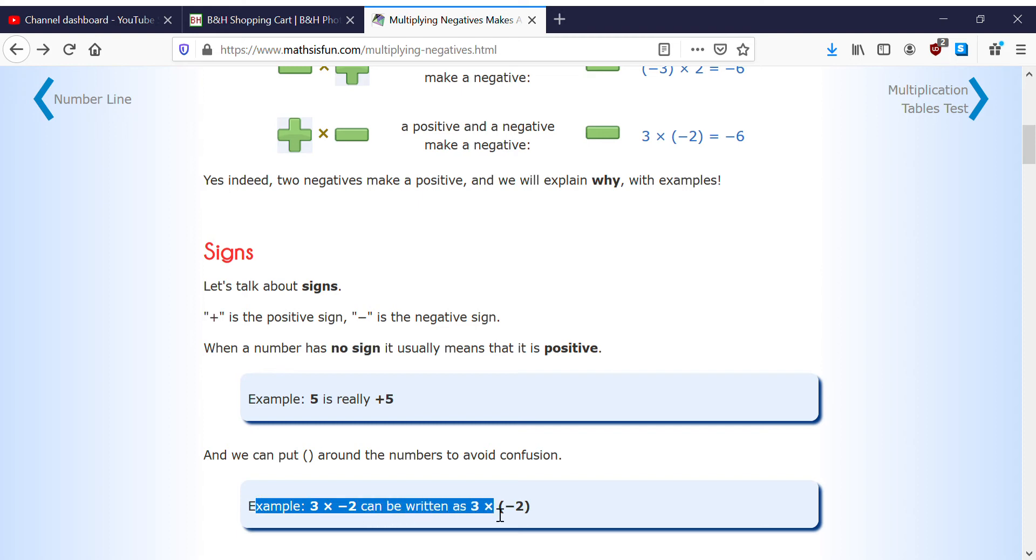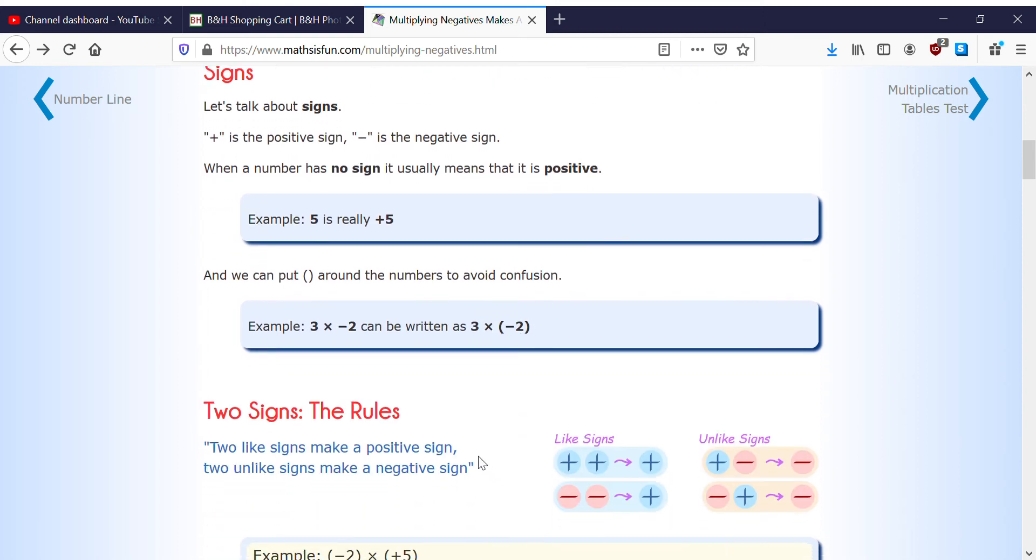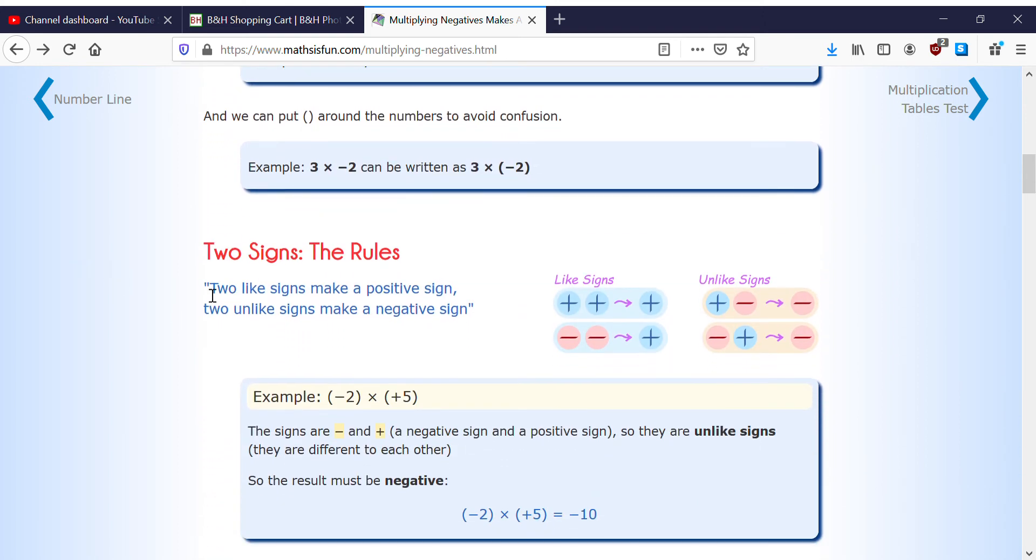2 can be written as three times negative 2 with brackets around it. Two like signs make a positive sign. So these are the like signs, these are the unlike signs - unlike signs make a negative sign.